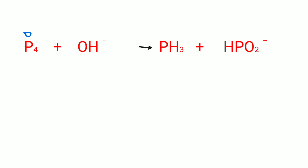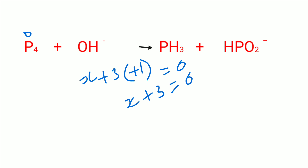Next, we need to calculate the oxidation number of phosphorus in phosphine (PH3). We assume phosphorus as x. There are three hydrogen atoms, each with oxidation number plus one, so three times plus one. Since phosphine is a neutral compound, x plus three equals zero, giving x equal to minus three. So the oxidation number of phosphorus in phosphine is minus three.